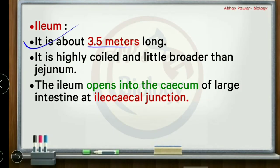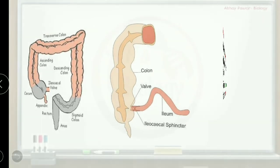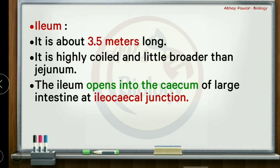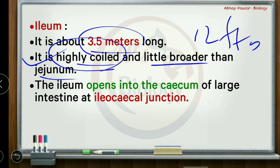The ileum is the third part of the small intestine, approximately 3.5 meters in length — about 12 feet. To recap: duodenum is 25 cm, jejunum is 2.5 m, and ileum is 3.5 m. The ileum is highly coiled and slightly broader than the jejunum. It opens into the cecum of the large intestine at the ileocecal junction.